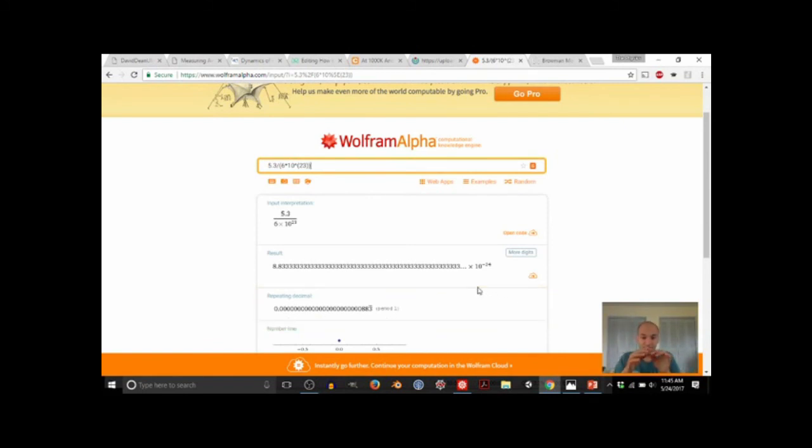And so this is the volume of a little cube surrounding that atom. If we want to say what is the radius of that cube, or the length of that cube, you have to take this to the power of 1/3. And this is because the volume of something is just the length cubed, so to get the length from the volume you do the 1 over 3 power.